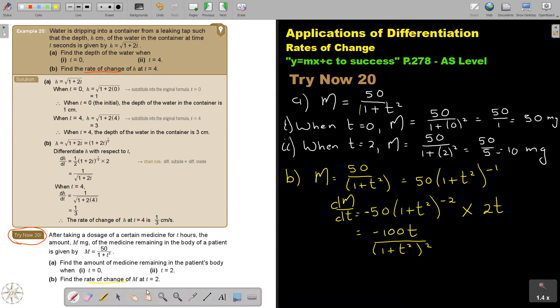And now find the value of dm/dt at t equals 2. When t is 2, dm/dt will be equal to negative 100. And now I will substitute 2. I can simplify. Negative 200. This is 1 plus 1, so it's 4.